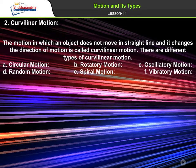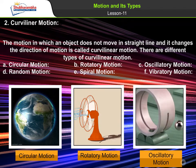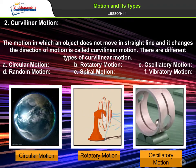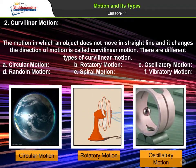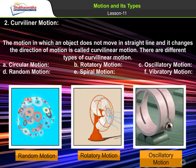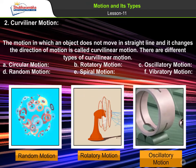Curvilinear Motion is the motion in which an object does not move in a straight line and it changes the direction of motion. There are different types of Curvilinear Motion: Circular Motion, Rotatory Motion, Oscillatory Motion, Random Motion, Spiral Motion, and Vibratory Motion.